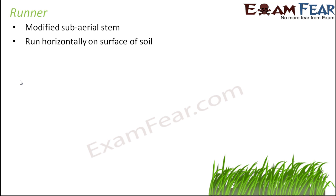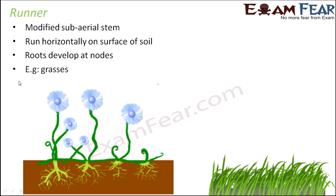In runners, the internodes are quite long, and roots develop at their nodes. Now if you look at this picture it will become clear. This is an example of a runner — it runs horizontally along the ground. These are the nodes where roots have developed. The internodes are very long. So roots develop from the nodes and the stem runs horizontally on the surface of the soil.